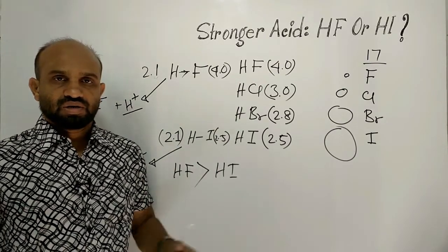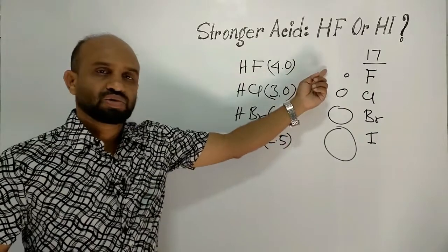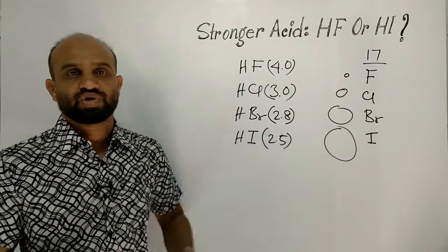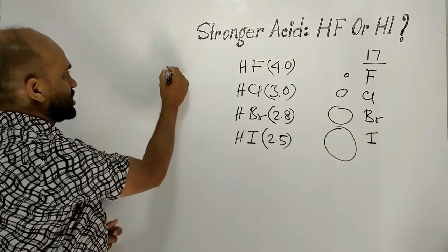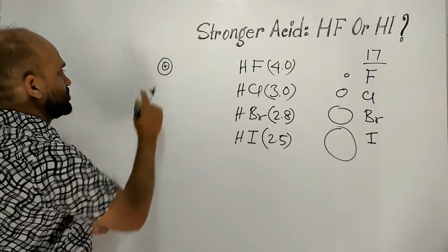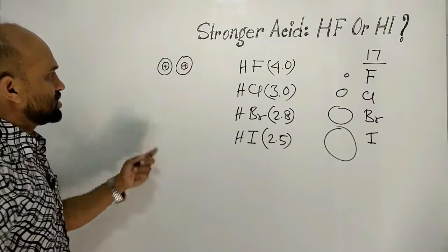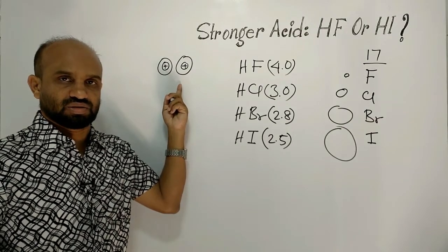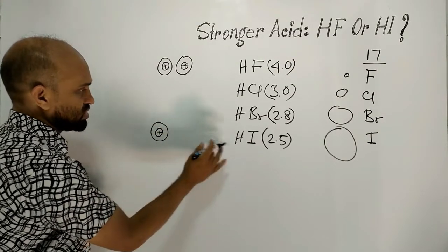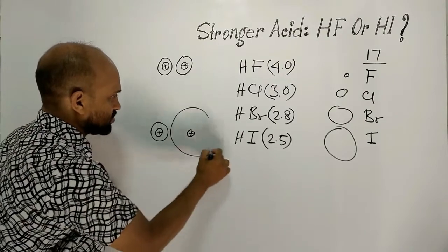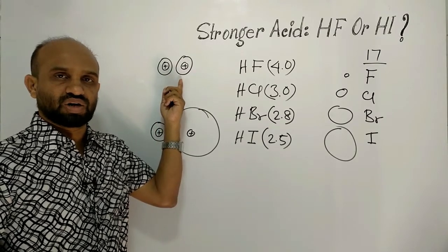Let's see how the opposite thing happens. We know that from top to bottom along a column in the periodic table, atomic sizes increase. Suppose this is a hydrogen atom and this is a fluorine atom — they are almost similar in size. But in the case of hydroiodic acid, this is a hydrogen atom and the iodine atom is much bigger in size.